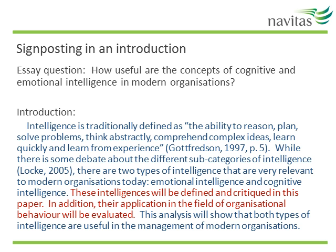Take a look at this essay question and the introduction to the essay. Pause the video here and press play again when you're done reading. The essay question is asking for a discussion of two types of intelligence. This introduction sets up the essay well. The first sentences give a definition of the key term and explain the context of the issue to be discussed. The sentence in red clearly outlines exactly what the writer will do in this essay — this is known as the signposting sentence.